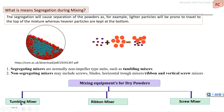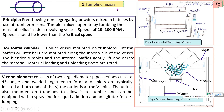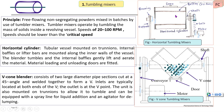The mixing equipment has three main groups: first, the tumbling mixer; second, the ribbon mixer; and third, the screw mixer. The tumbling mixer uses a tumbling action responsible for mixing free flowing, non-segregated powder material. The material must be dry and uniform in size to be properly mixed in a tumbling mixer.